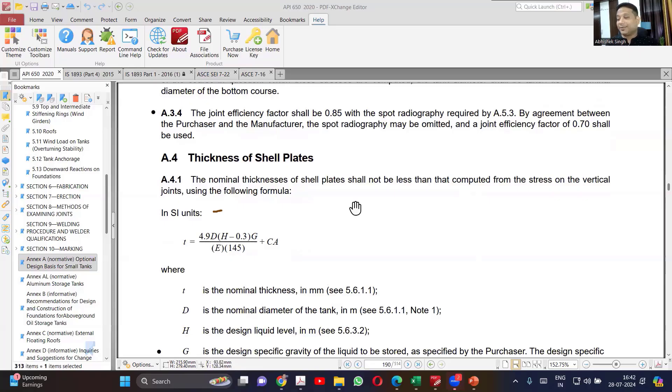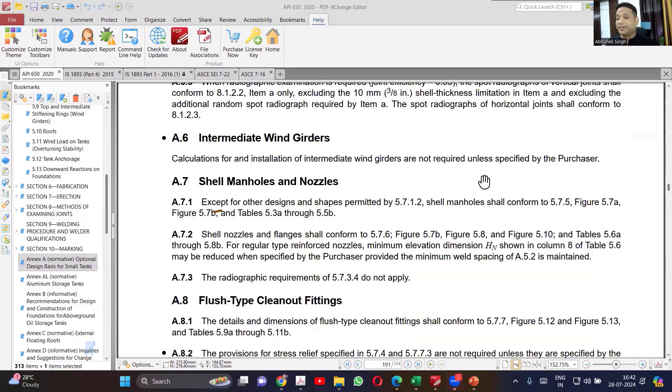So that is a use case which I am telling you - a use case of this annexure when we use. So by using this annexure, you can avoid the radiography requirement. Intermediate wind girders.